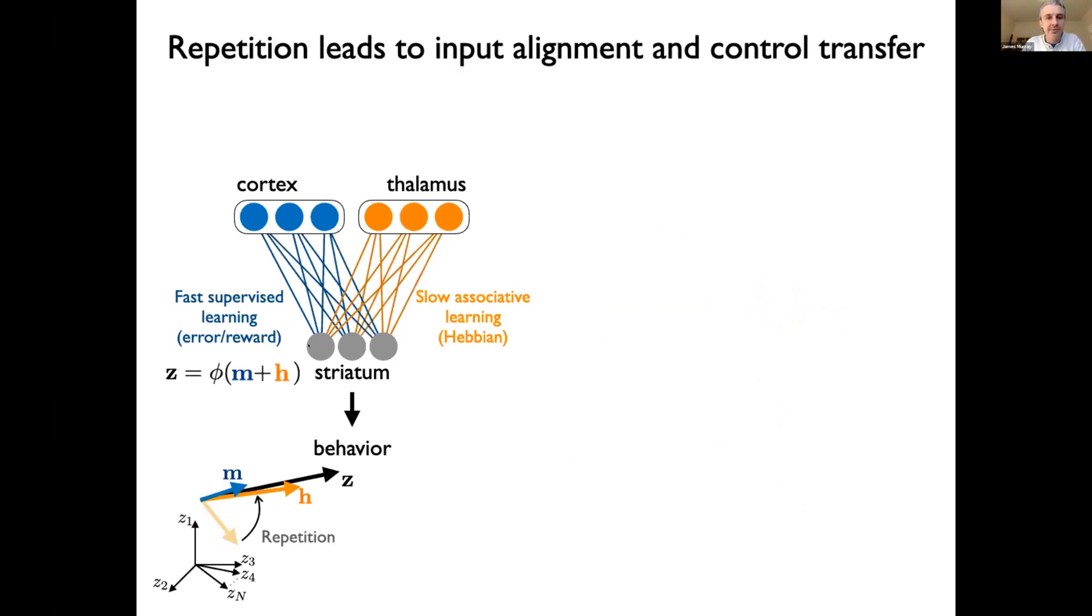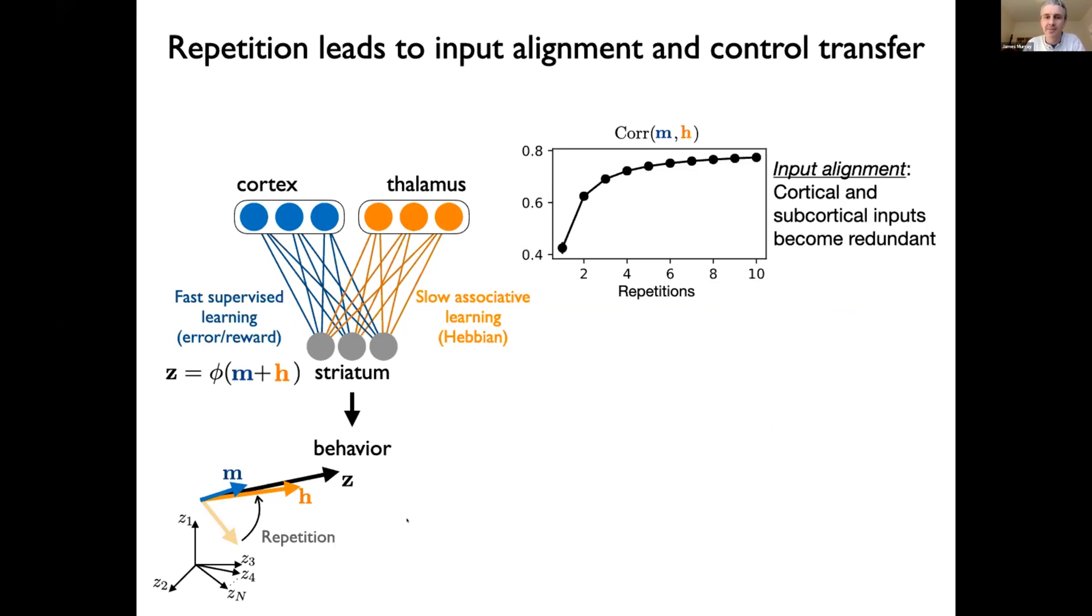So let's now move from a single neuron in striatum to a population of neurons described by some population activity vector z, which is determined by its inputs along the first pathway and the second pathway, we'll call those vectors m and h. And we can think of these as three vectors in this high dimensional space of neural activities. And two things happen if we think of it in this way. The first is what I'll call input alignment. And that means that all of these vectors are going to become aligned with one another as I repeat a particular pattern multiple times. And that's because of this reinforcing associations in the second pathway that causes these vectors to align. And so what that means is that these two input pathways become sort of redundant after practice has happened a lot. And that sort of foreshadows the result that we want to show about motor cortex lesion and why motor cortex might not be important after learning.